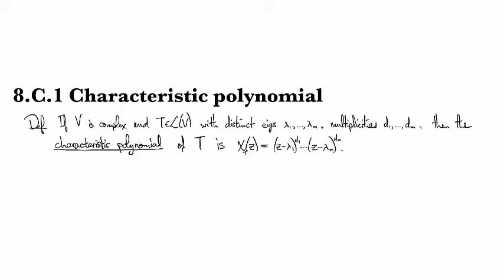In this chapter we're going to be looking at the characteristic polynomial. Again, we're in a complex vector space, and if we've got an operator with distinct eigenvalues lambda 1 through lambda m and corresponding multiplicities d1 through dm, and remember here our definition of multiplicity is the dimension of the generalized eigenspace.